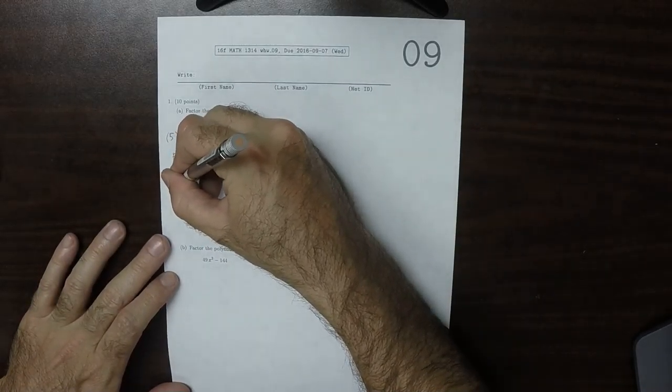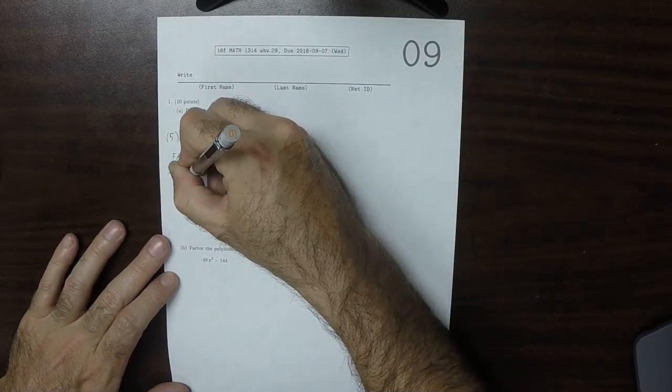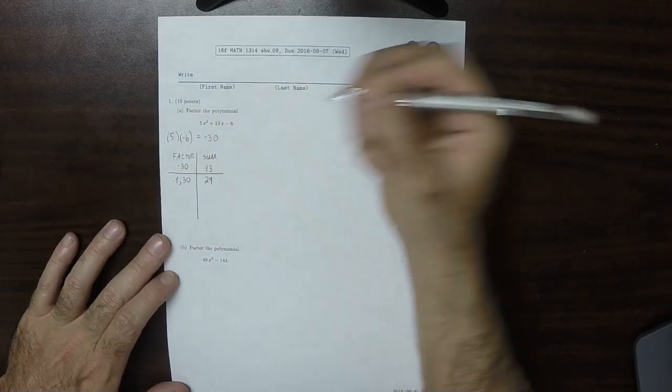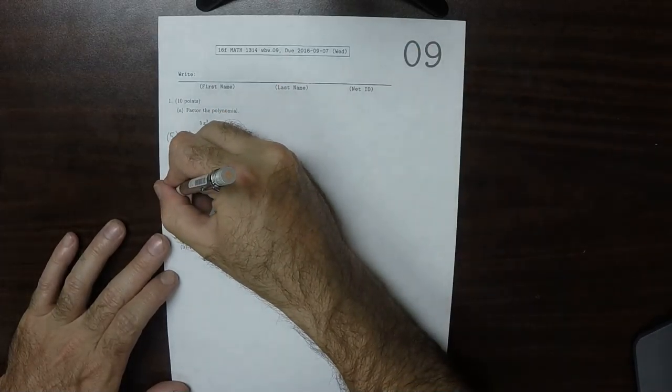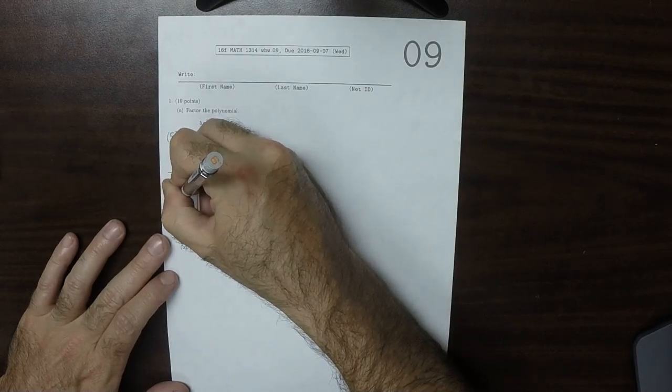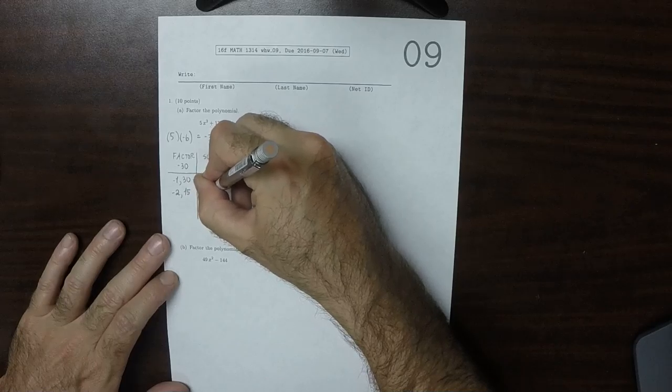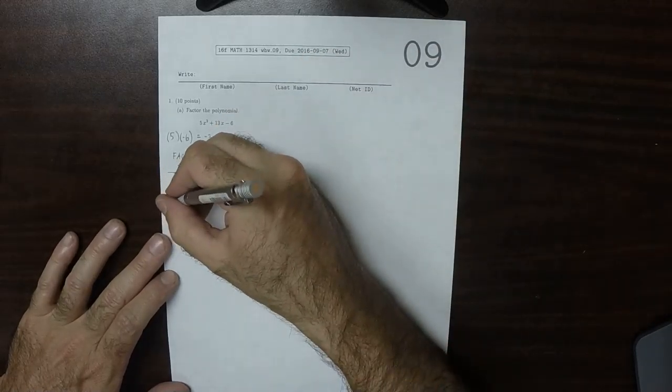So how about negative 1 and 30? That's a factorization. The sum of negative 1 and 30 is 29. That's not what we were looking for. How about negative 2 and 15? The sum of negative 2 and 15 is 13. That's what we were looking for.